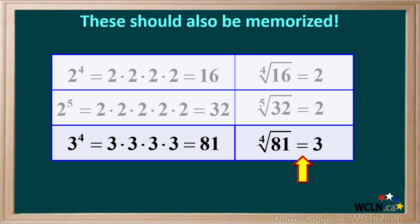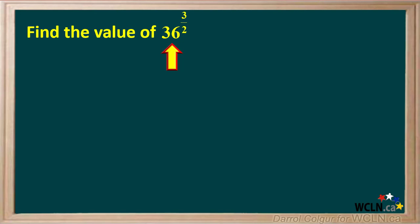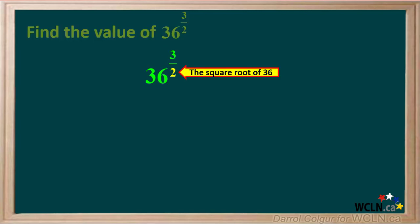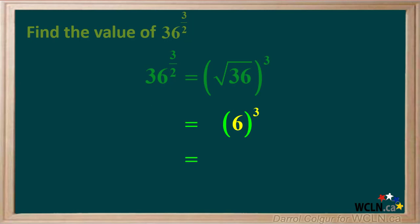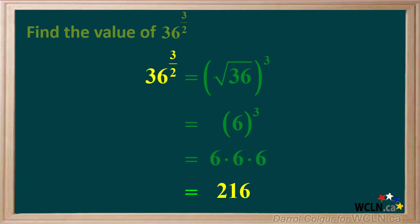Recognizing all the numbers we mentioned can often help you quickly solve problems with fractional exponents. For example, let's say we're asked to find the value of 36 to the power of 3 over 2. The 2 in the denominator of the fractional exponent means the square root of 36, so we can write the square root of 36 to the power of 3. We know that the square root of 36 is 6, so 6 cubed is 6 times 6 times 6, which is equal to 216. So 36 to the power of 3 over 2 has a value of 216.